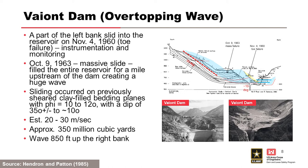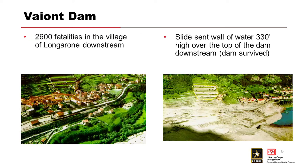The wave was just colossal — like the four horsemen of the apocalypse riding down your valley. There were 2,600 fatalities in the village of Longarone downstream. A slide sent a wall of water 330 feet high over the top of the dam. And the dam survived — it was still in place. You can see the before and after effects of what happened in the valley.